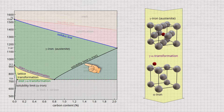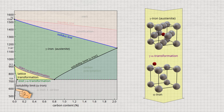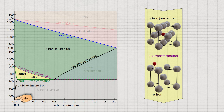Thus, the solubility of carbon in alpha-iron is significantly lower than that in gamma-iron. The maximum solubility of carbon in alpha-iron is reached at 723 degrees Celsius and is only 0.02%. At room temperature, the solubility drops below 0.001%. The low solubility of carbon in alpha-iron can therefore often be neglected.